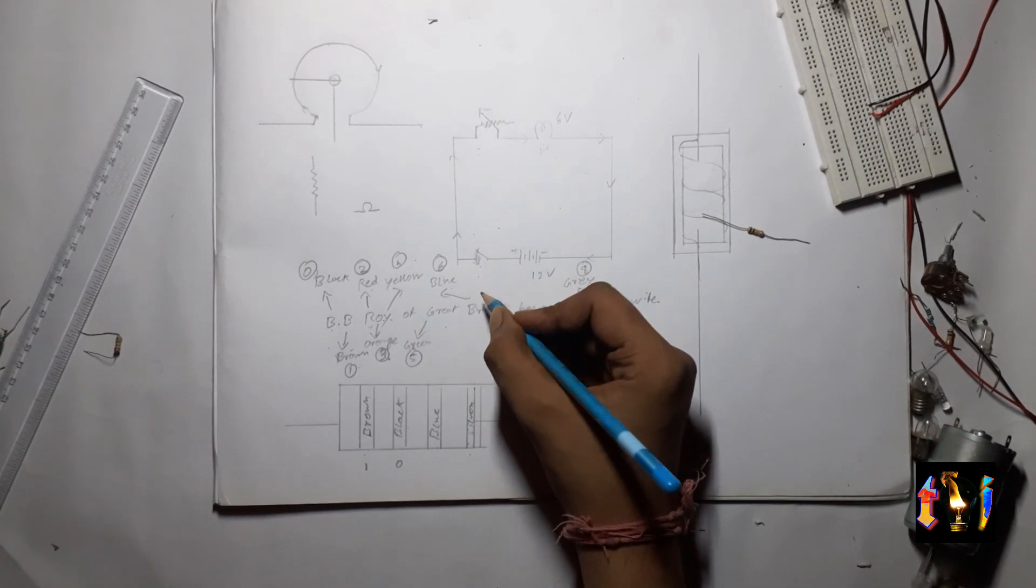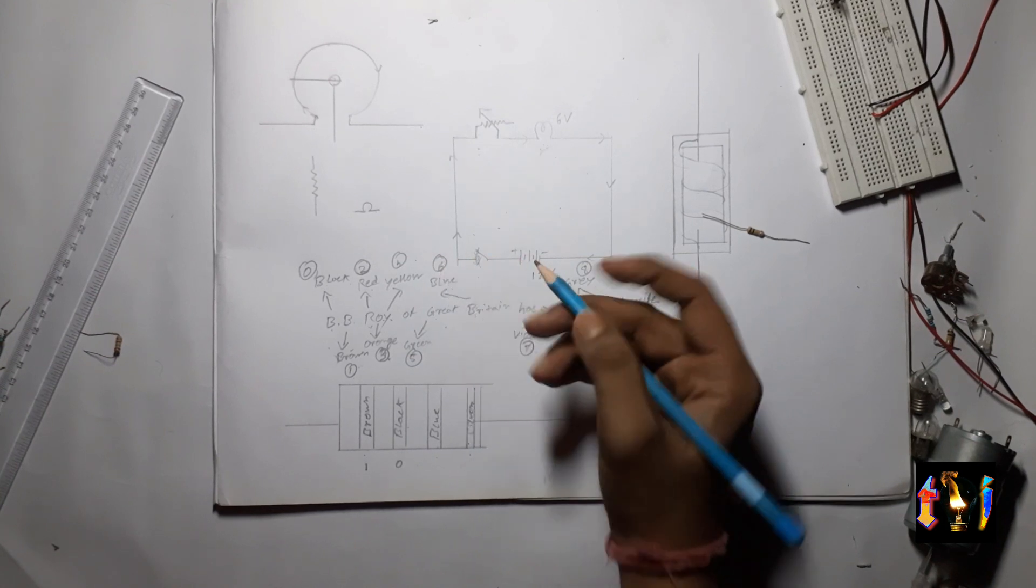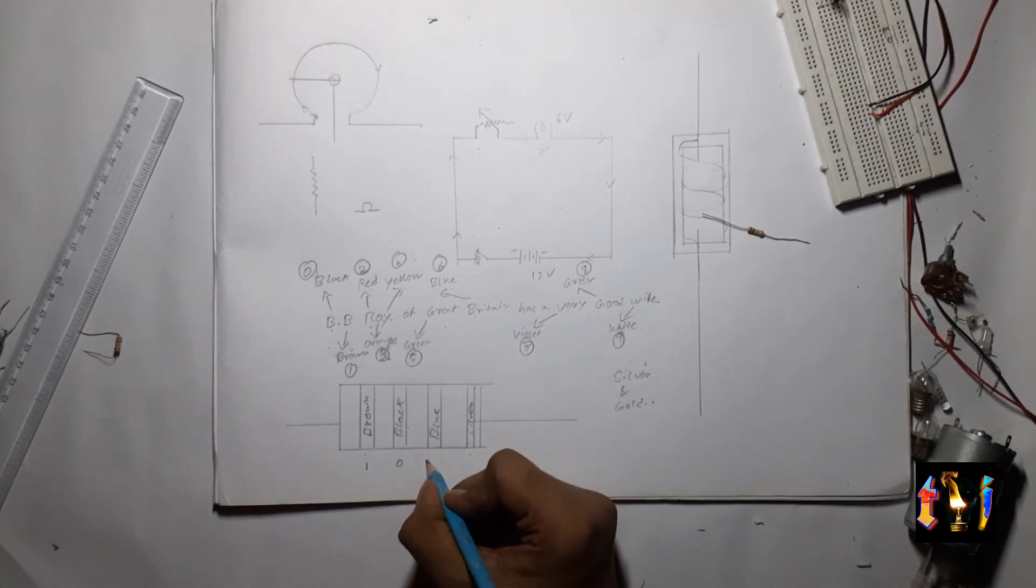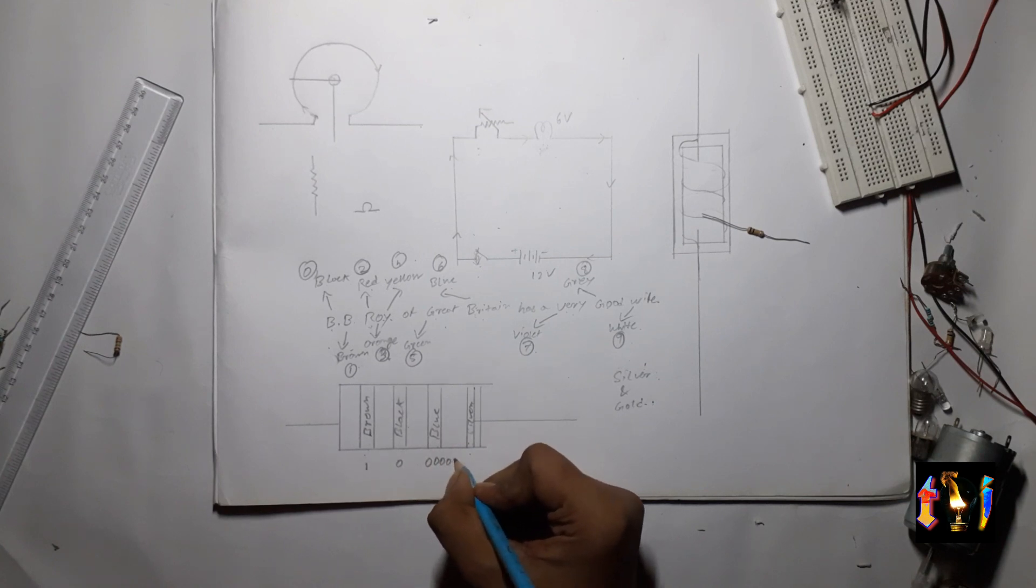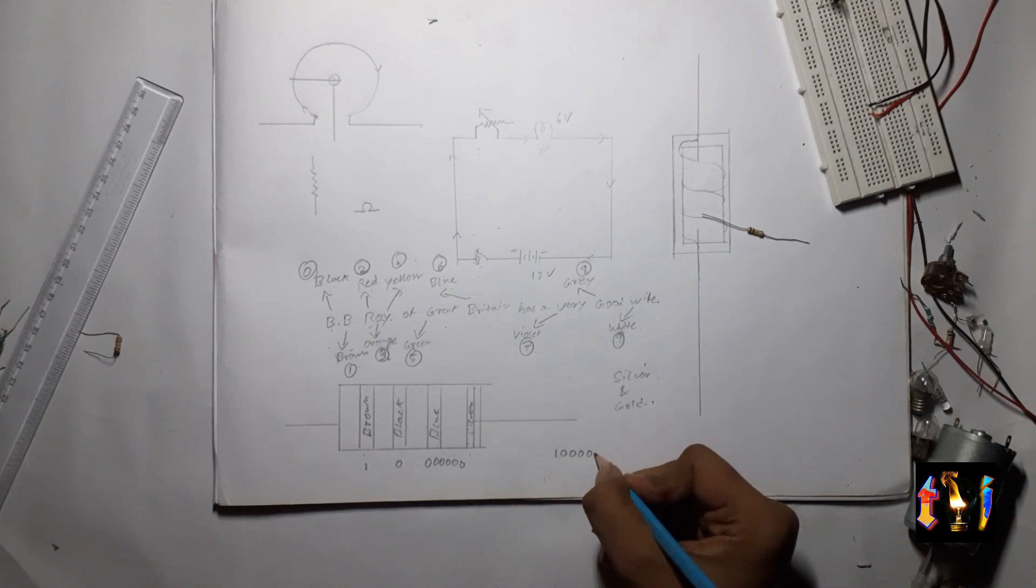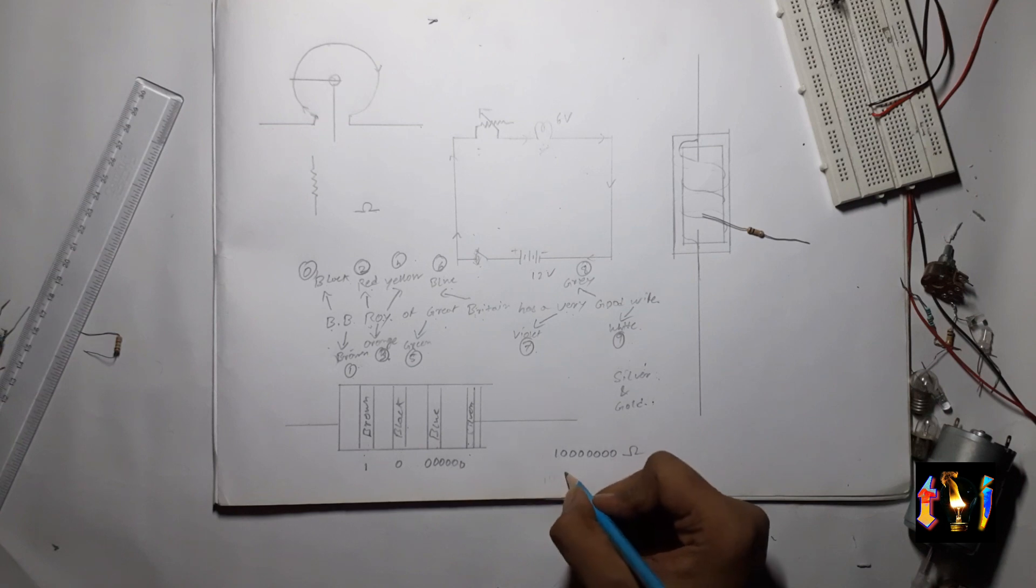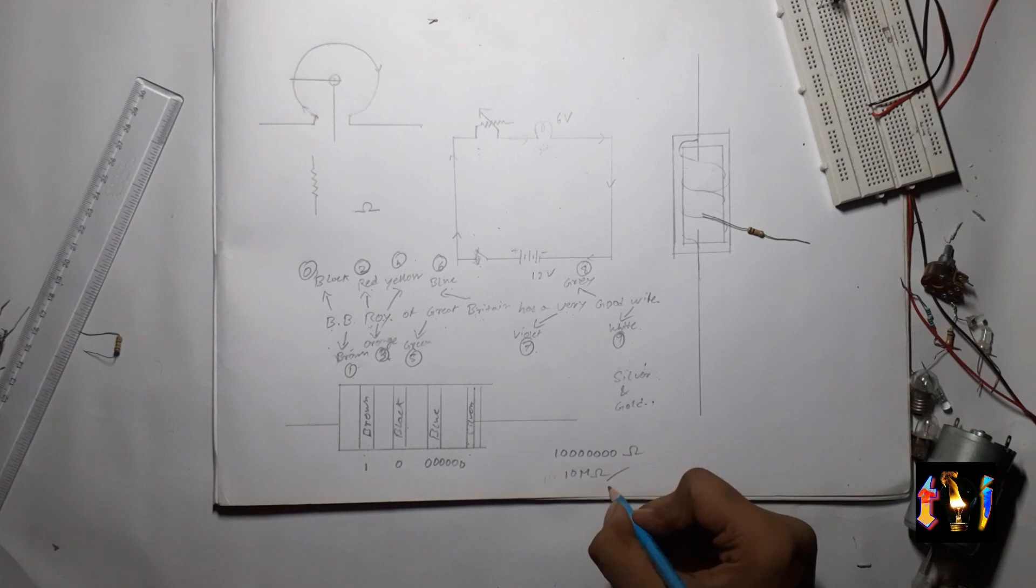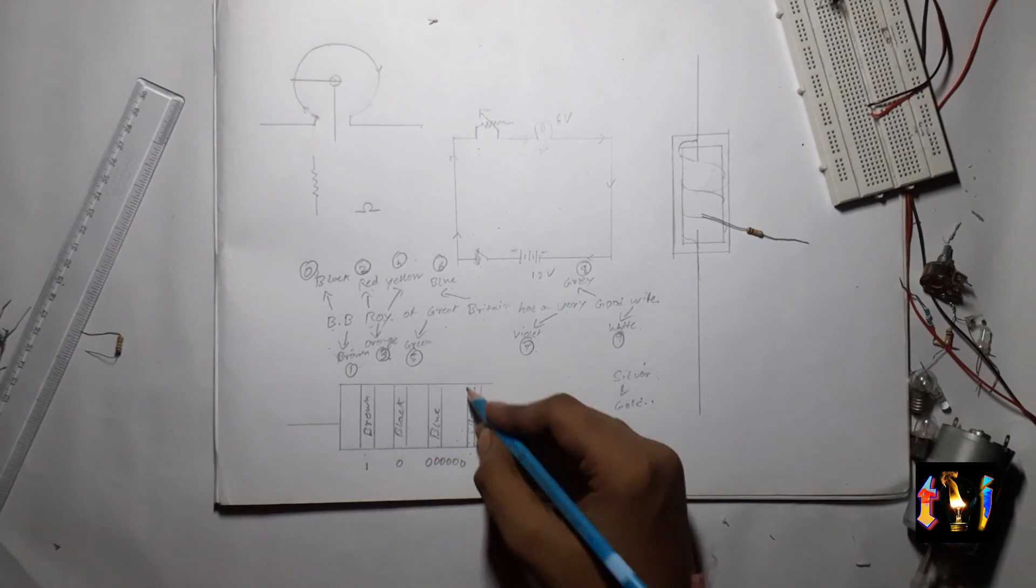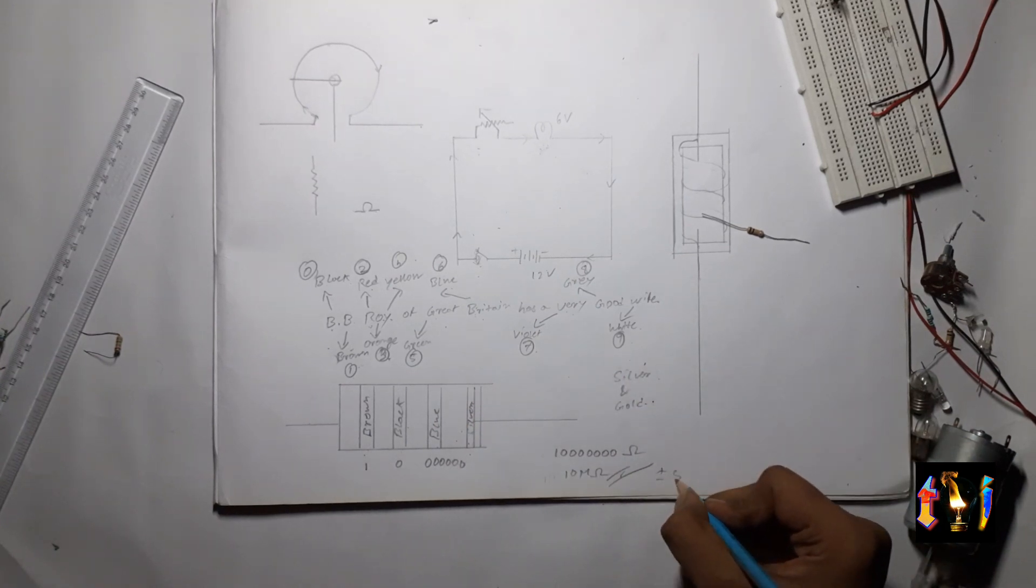And the third one is the multiplier which is blue in this case. That means blue 6. So there will be six zeros after this 10. So the resistance will be 10,000,000 which means 10 mega ohms. That will be the resistance of this resistor and this silver ring resembles plus minus 5 percent tolerance.